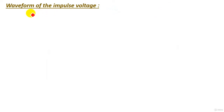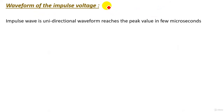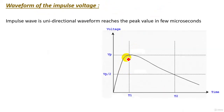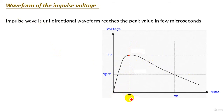Now let's understand the waveform of impulse voltage. When lightning strokes occur, the insulator or high voltage component is subjected to the impulse voltage waveform. This waveform is unidirectional and reaches the peak value in a few microseconds. The time it takes to reach the peak value is called the rise time.